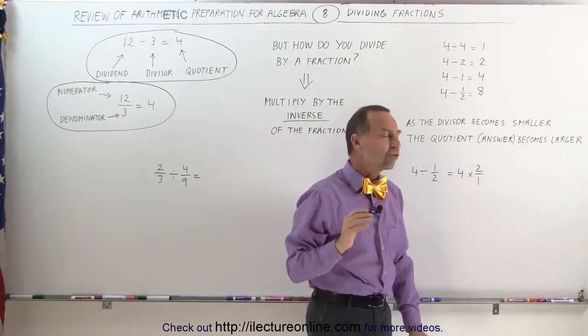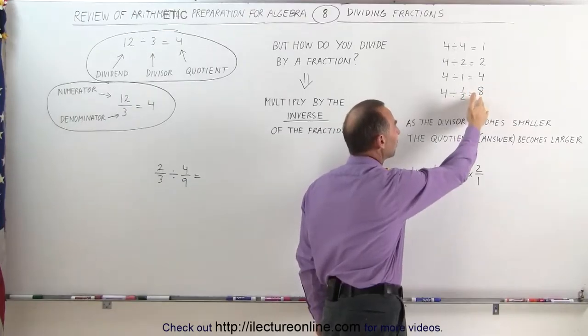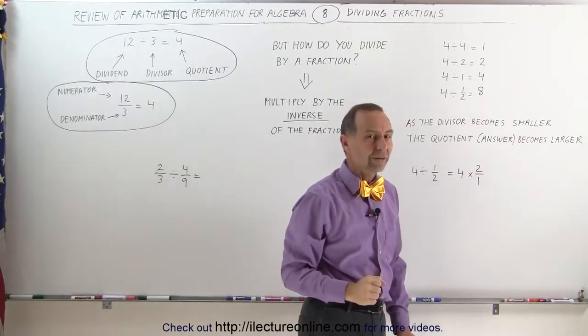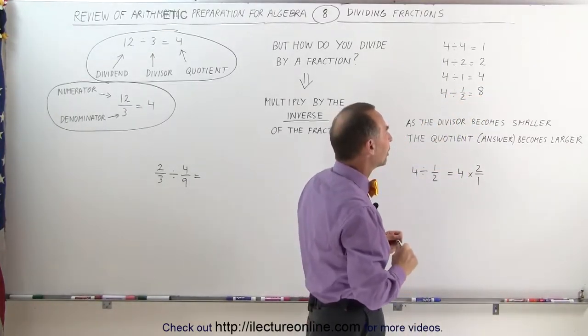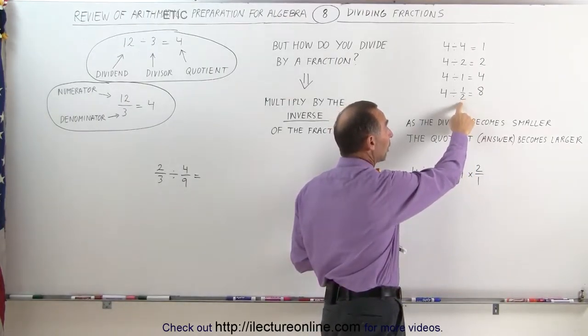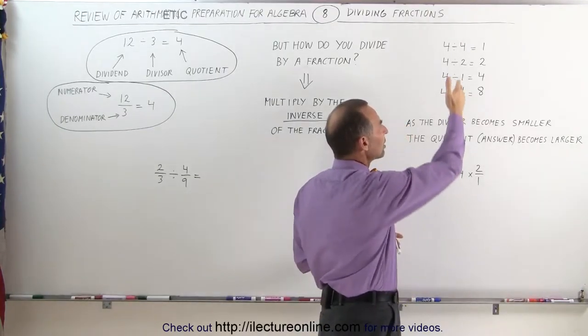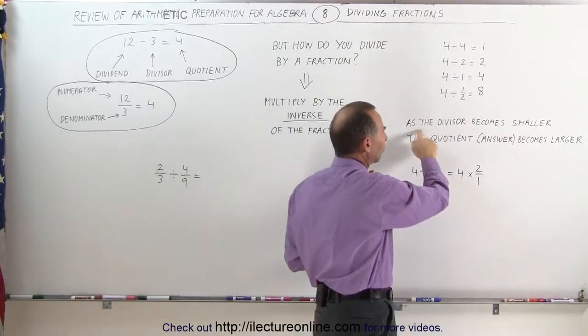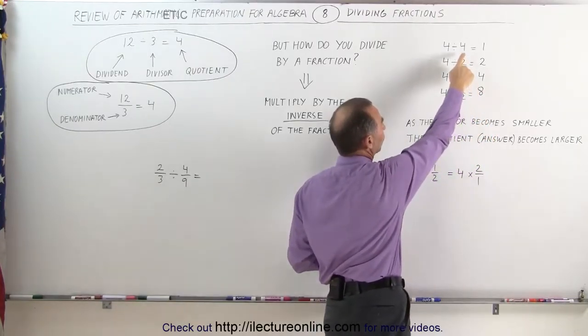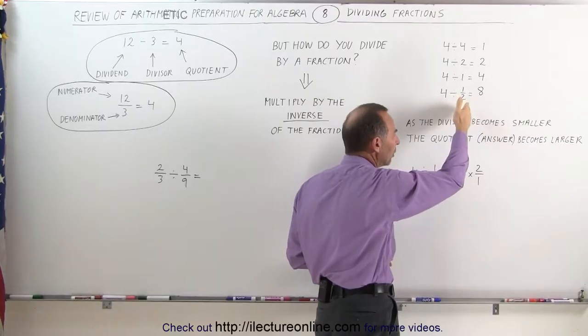4 divided by 1 half—well, the answer to that is 8. The reason you know that's true is because when you multiply the 8 times the 1 half, that gives you 4 again. What's strange about dividing by a fraction is that you end up with a number that's bigger than the original number you started with, and that kind of makes it a little bit confusing. So don't let that confuse you. When you divide by a number that's smaller than 1, you end up with a bigger number than what you started with.